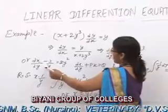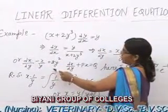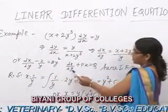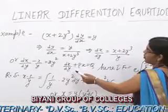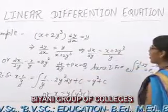Next, dx/dy minus x/y is equal to 2y squared. This gives us dx/dy plus px is equal to q.